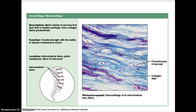Fibrocartilage has a matrix similar to but less firm than hyaline cartilage, composed of thick collagen fibers that predominate throughout. Its functions include tensile strength and the ability to absorb compressive shock. Fibrocartilage is located in the intervertebral discs, pubic symphysis, and the discs of the knee joint. It is used for absorbing shock and is found between structures that withstand tension and pressure, such as the discs between vertebrae and the pads in the knee joint.